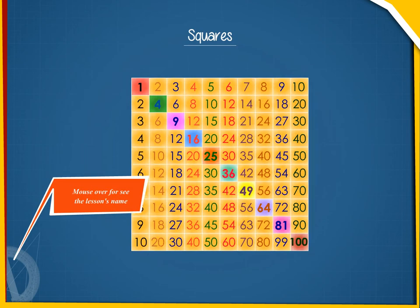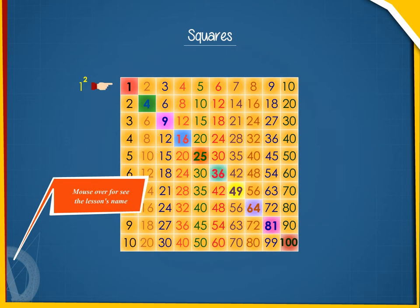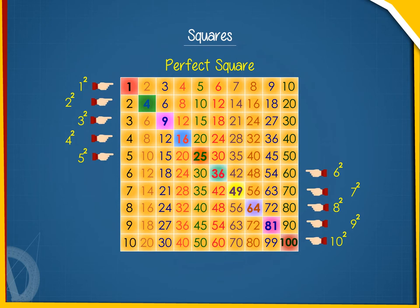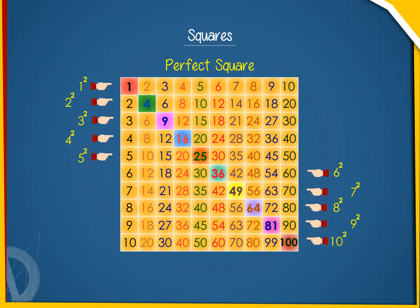Squares. In mathematics, a square number, sometimes called a perfect square, is an integer that can be written as the square of some other integer. In other words, it is the product of an integer with the same integer. Square numbers are non-negative.